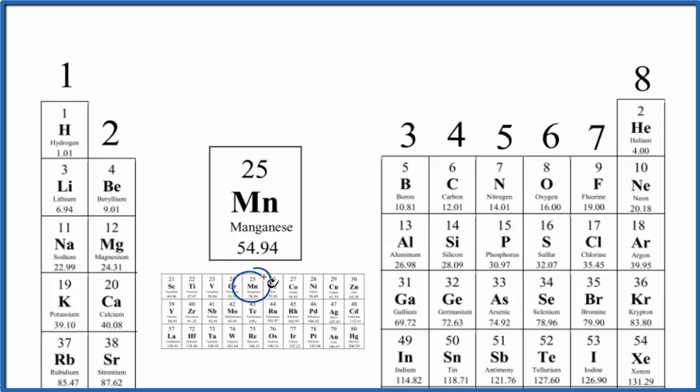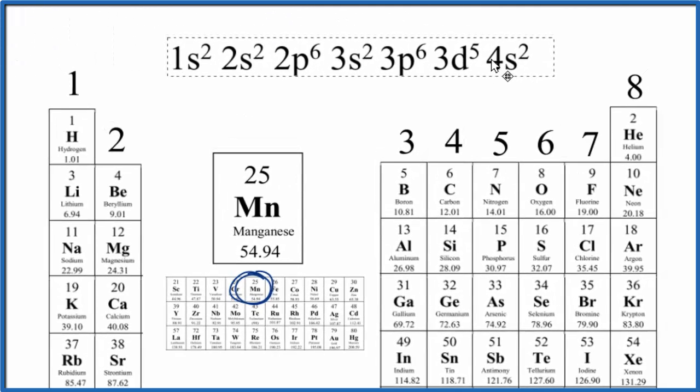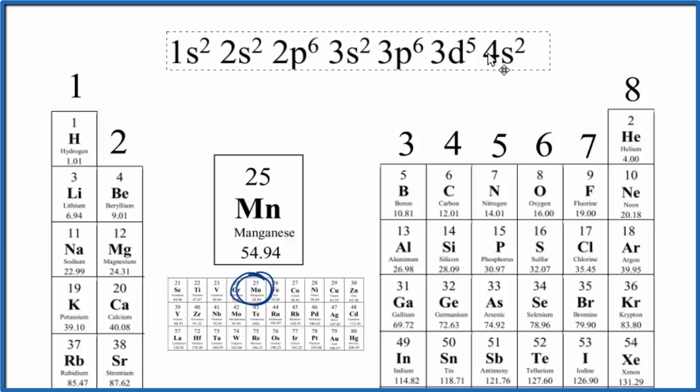But for the transition metals like manganese, it's a little bit more difficult. Probably the best way is to write the electron configuration for manganese. So if we do that, this is what we end up with.